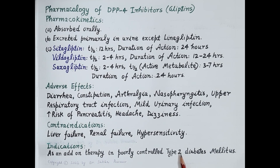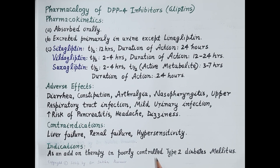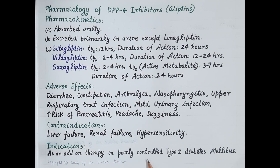So this is in brief on pharmacology of GLP-1 receptor agonists and DPP-4 inhibitors. Please note information provided in this video is only for academic and informative purposes. For use of any of these drugs or for the treatment of type 2 diabetes mellitus, please consult your physician. Do not self-medicate. If you find the video useful, kindly like, subscribe, and share. Thanks for watching.